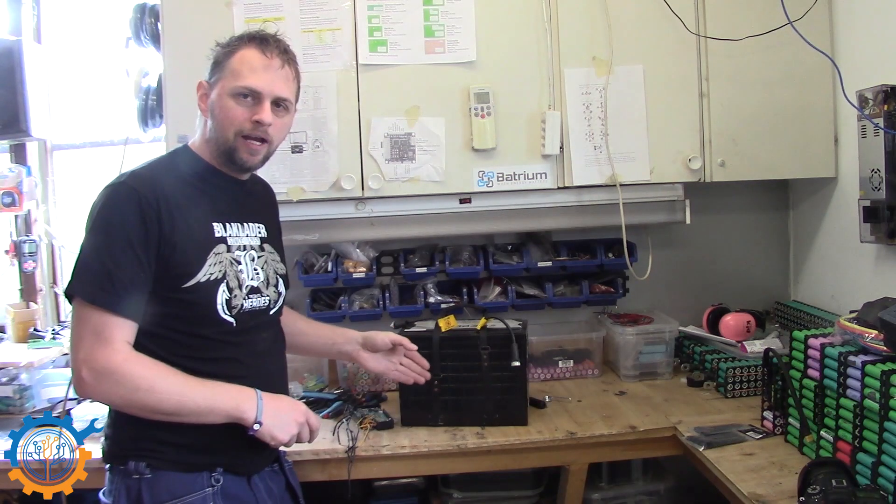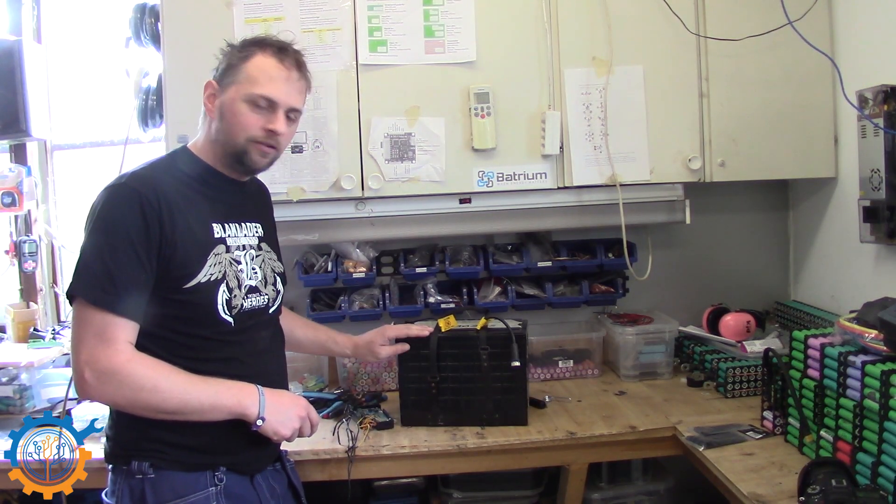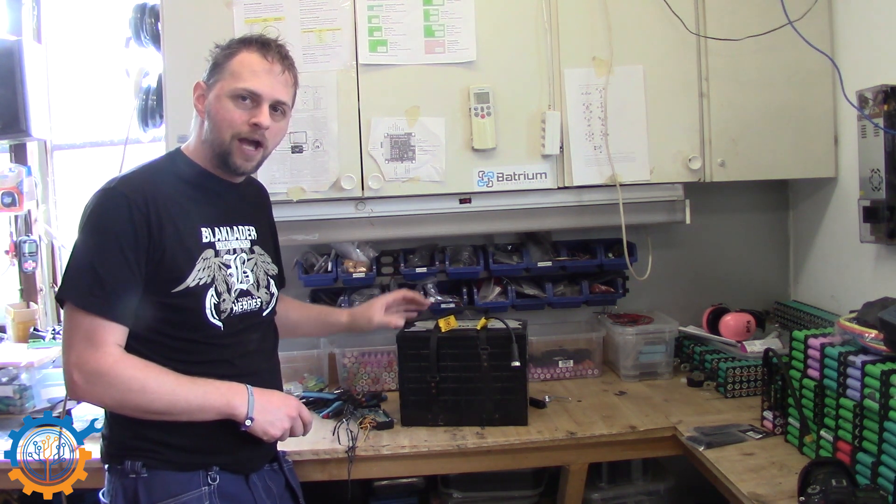Welcome back guys. Today we are going to take a look at the Valens batteries and convert them to the BMS from Batrium. Here we have the Valens 12 volt batteries. They are lithium iron phosphate batteries and they have 4 cells inside with roughly 130 amp hours.